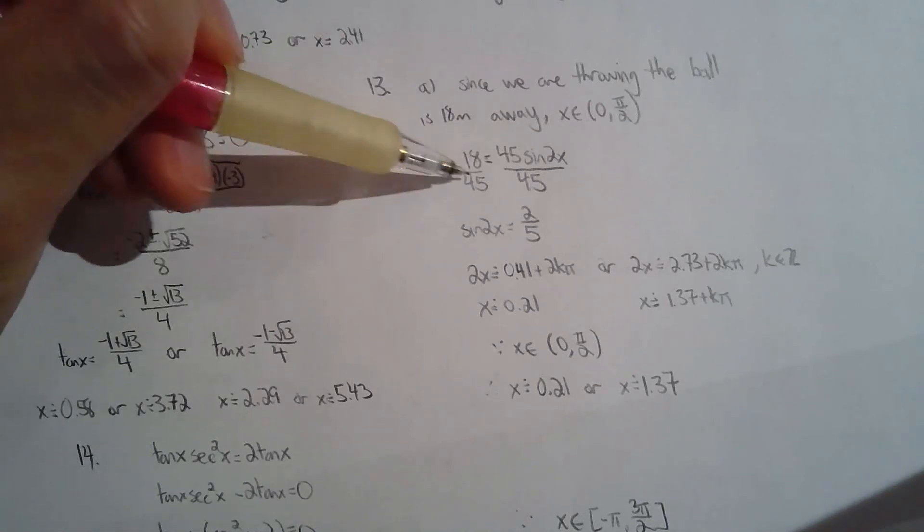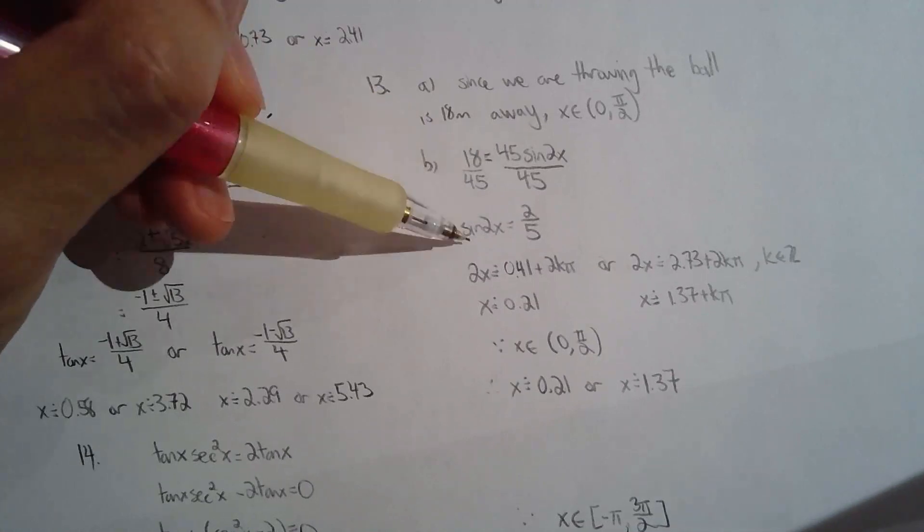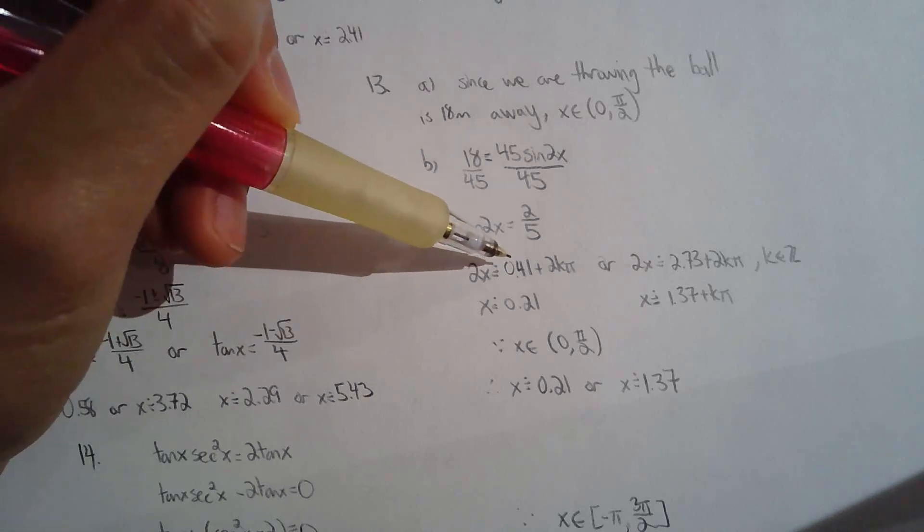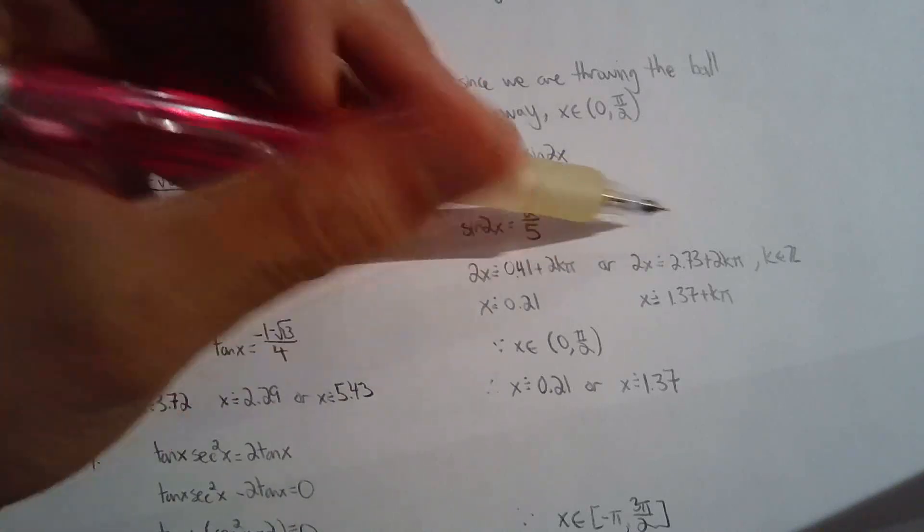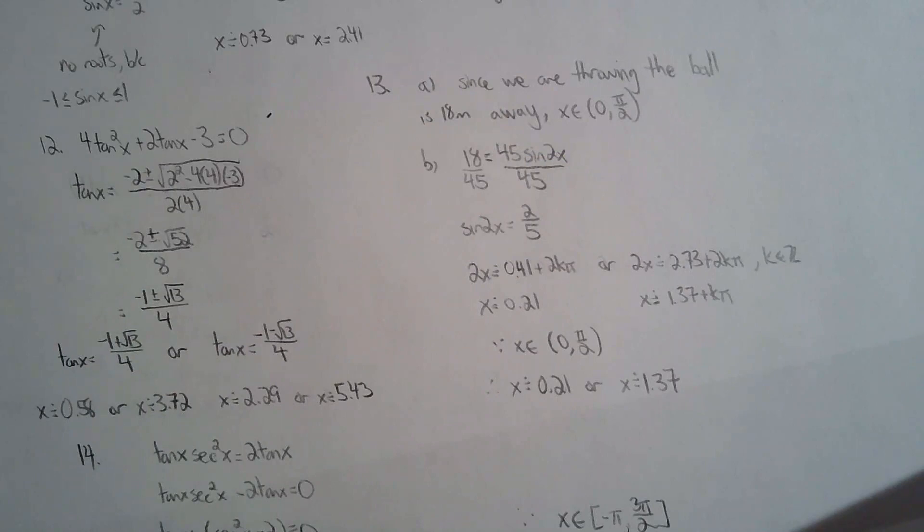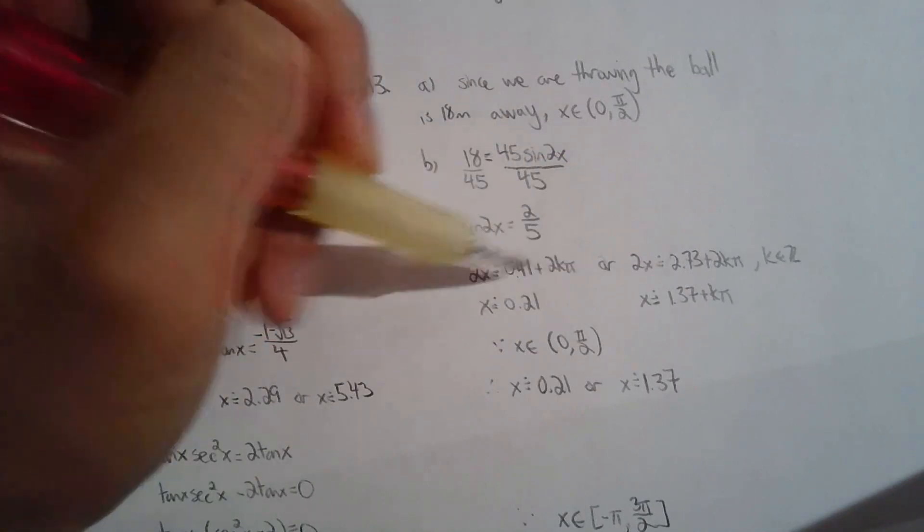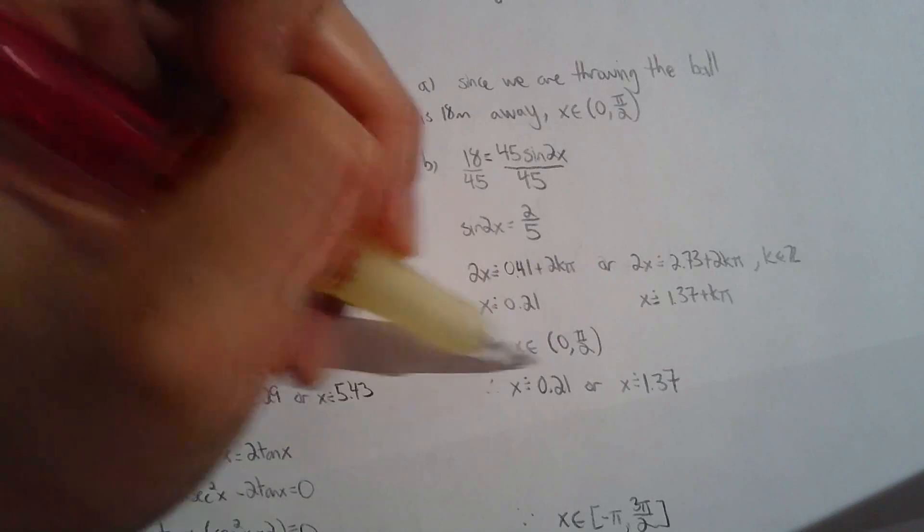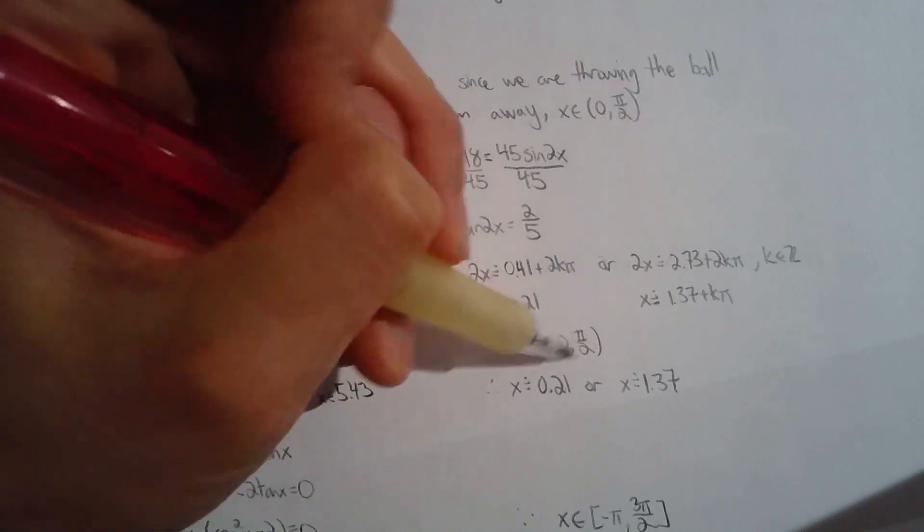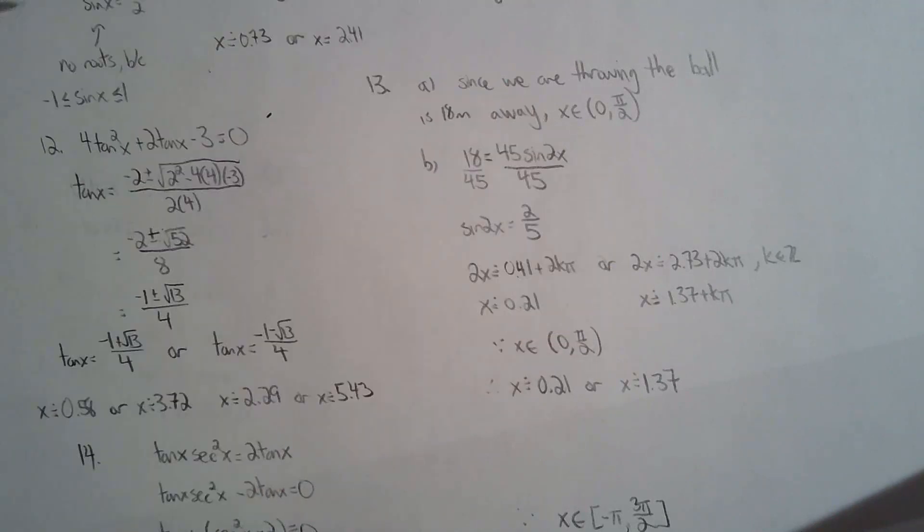The home plate is 18 meters away, so r equals 18. I see sine 2x equals two fifths, so I'm going to take the quadrant one answer, the quadrant two answer, and any angle coterminal to that. Divide both sides by two, and since x is between zero and pi over two, I have two solutions: approximately 0.21 or approximately 1.37.